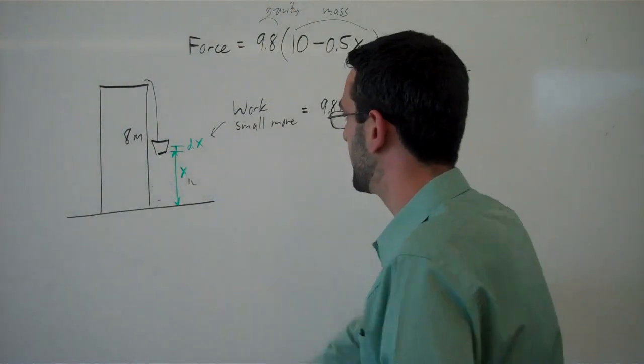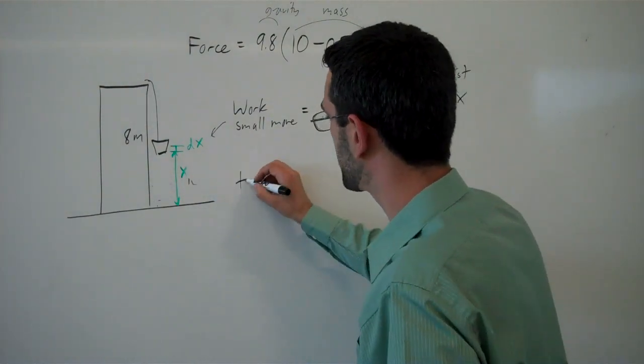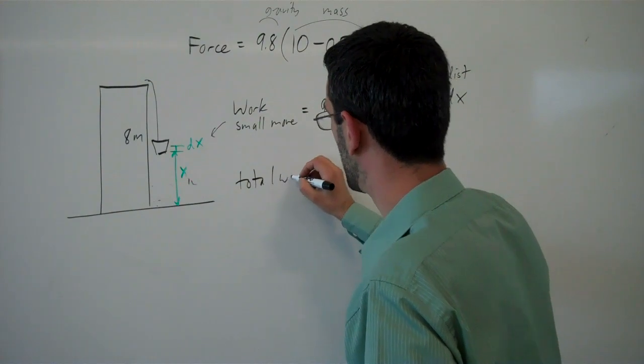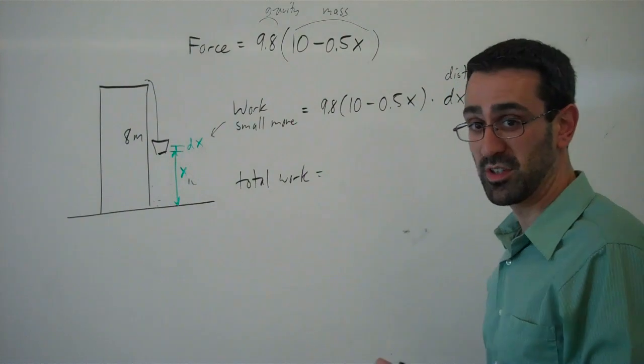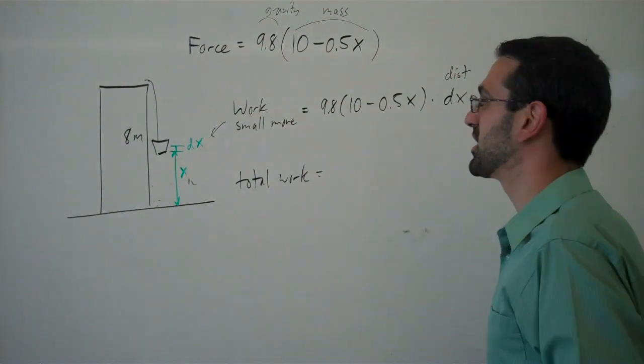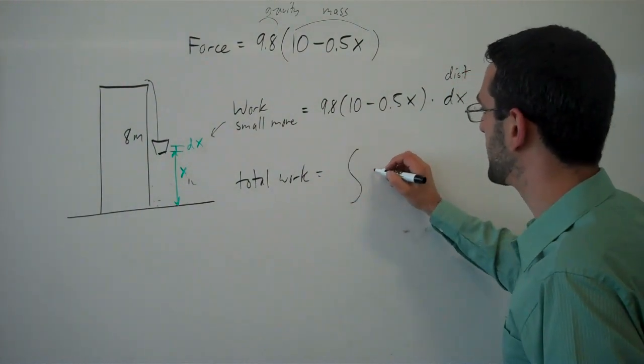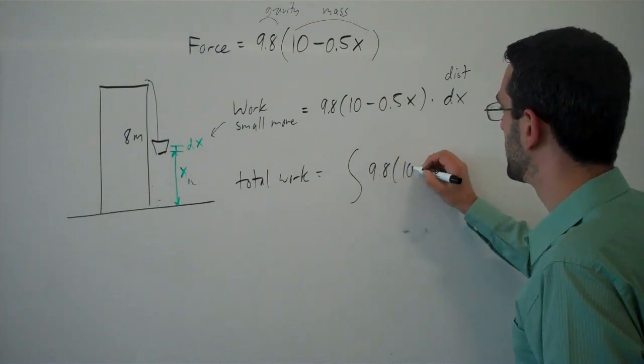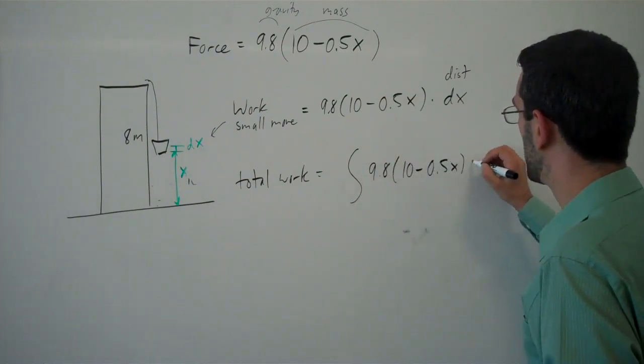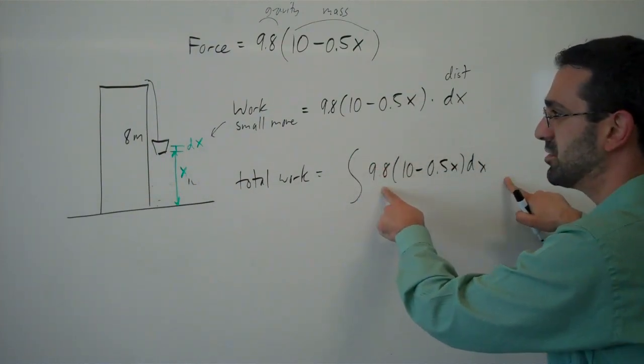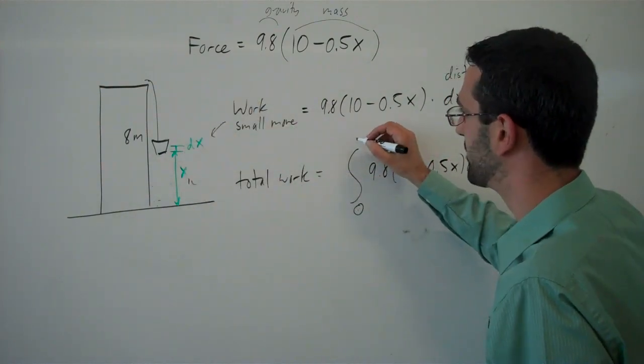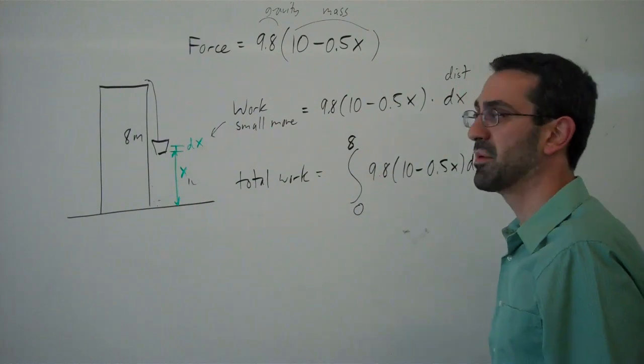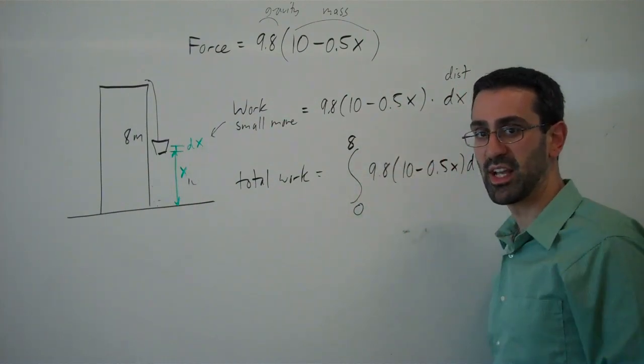Then the total work, the total work lifting the bucket will get by adding up all those tiny little moves. So now we'll integrate the tiny little moves for all the little moves from the very bottom of the building to the top of the building. So integrating from 0 to 8.